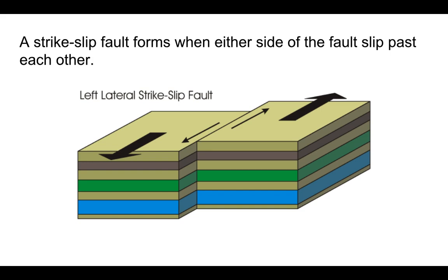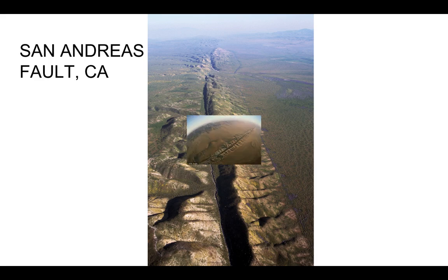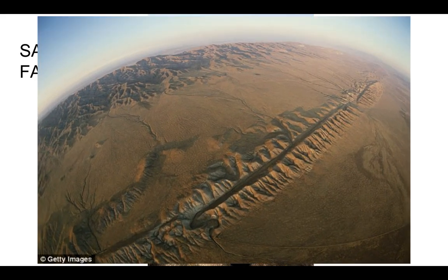Strike-slip faults form when either side of the fault slips past each other. An example of this is the San Andreas Fault in California. Strike-slip faults often cause earthquakes.